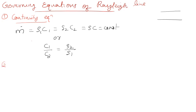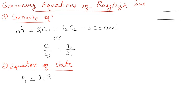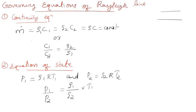The equation of state: P1 equals rho1 R T1, and P2 equals rho2 R T2. Therefore, P1 by P2 equals (rho1 by rho2) times (T1 by T2). The four governing equations are: continuity, equation of state, momentum equation, and energy equation.